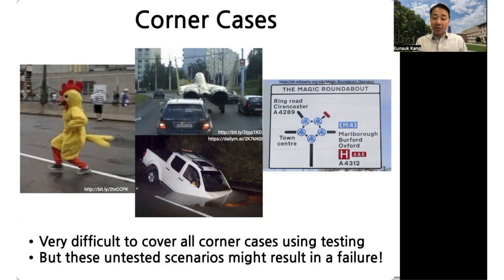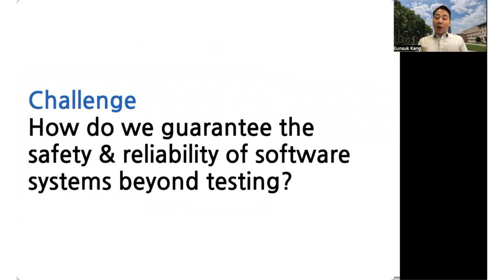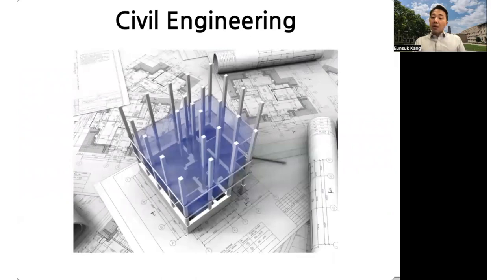The challenge is: how do we provide guarantees about the safety and reliability of the system beyond what can be achieved through software testing? Another discipline we can take inspiration from is the field of civil engineering, which deals with the design and construction of physical structures such as buildings and bridges. How do civil engineers ensure that structures cannot collapse, even under harsh environmental conditions?